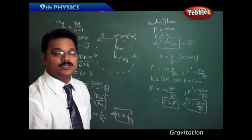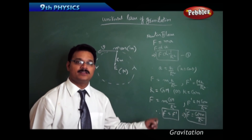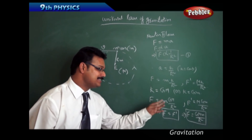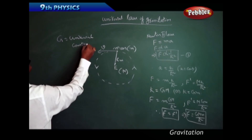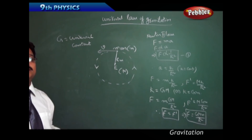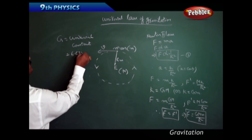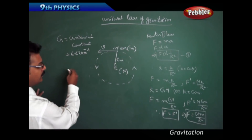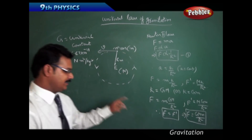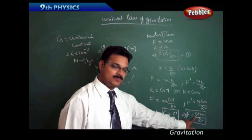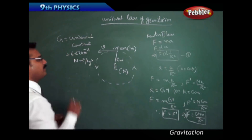So F = GMm/r² is the formula for the Universal Law of Gravitation. Here, capital G is called the universal gravitational constant. It is called universal because wherever you go in the universe, it has a fixed value. The value given by Isaac Newton is G = 6.67 × 10⁻¹¹ Newton·m²/kg². The unit is derived from G = Fr²/Mm, which gives Newton·m²/kg².